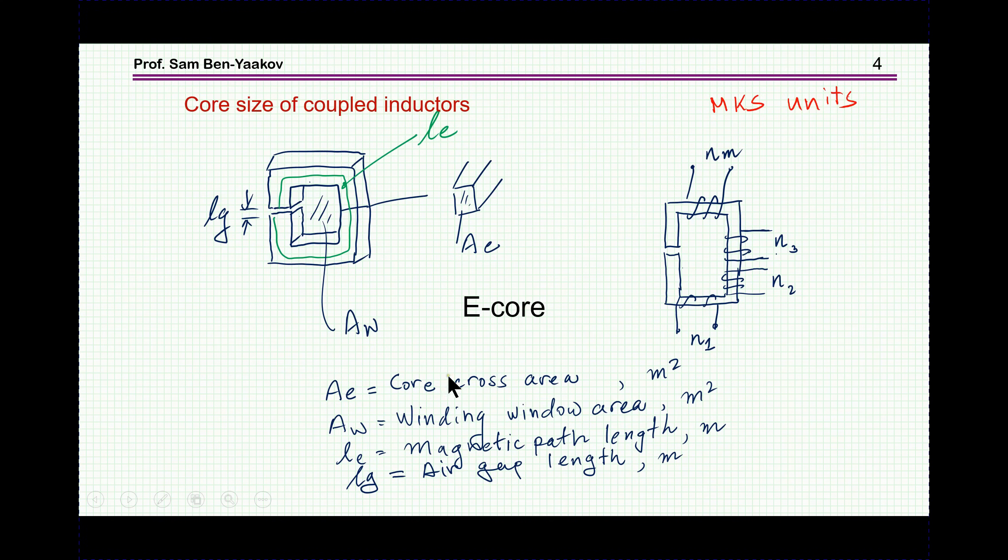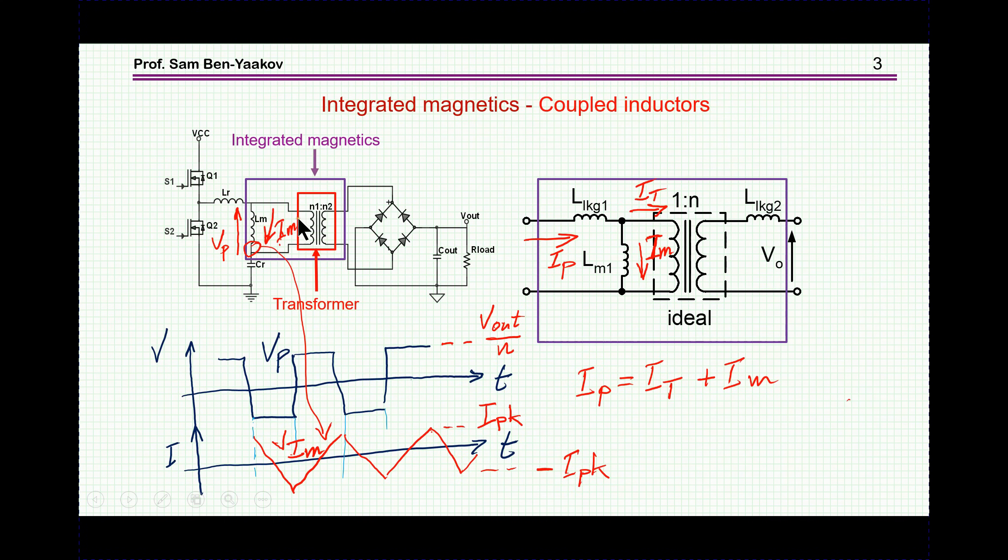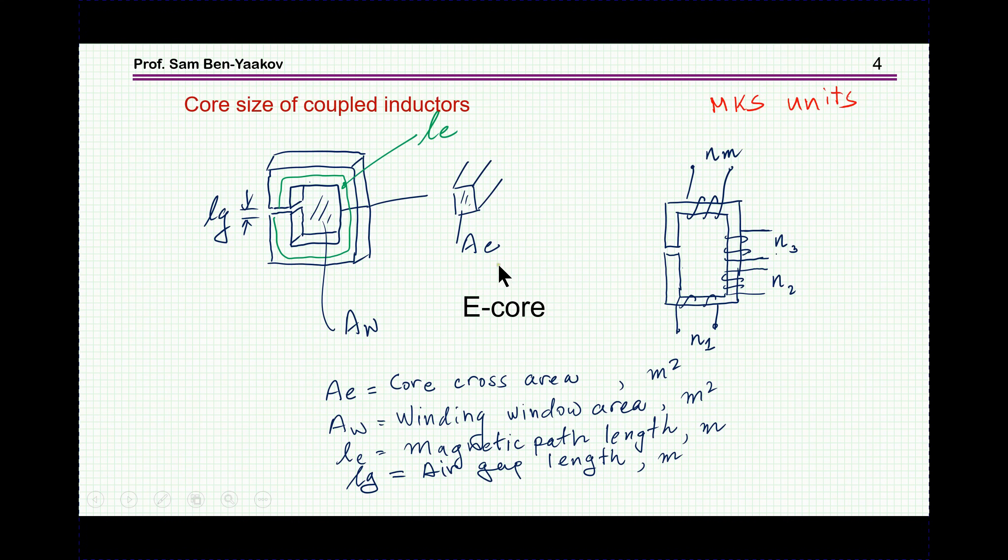The problem that I'm going to discuss now is how to estimate the core size of this coupled inductor. We have here a gapped core, we have a primary, and then we have a number of inductors. In our case, it's going to be like a total of two windings, but of course it could be more than two. We might have an auxiliary power supply.